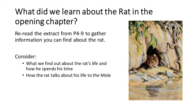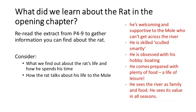So what did we learn about the rat in the opening chapter? Please could you re-read the extract from pages 4 to 9 to gather information about the rat, using the extract on class charts. Consider what we find out about the rat's life and how he spends his time, and how the rat talks about his life to Mole. Jot down your notes after you've re-read the extract. We learn he's welcoming and supportive to the Mole who can't get across the river. He is skilled — 'sculled smartly'. He is obsessed with his hobby, which is boating. He comes prepared with plenty of food — a life of leisure. He sees the river as family and food, and sees its value in all seasons. Please copy down what's on this slide.